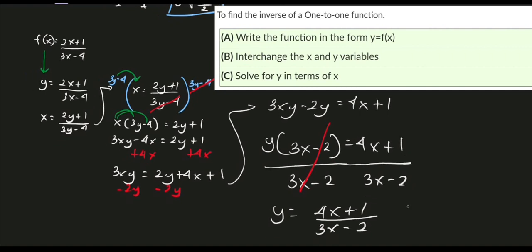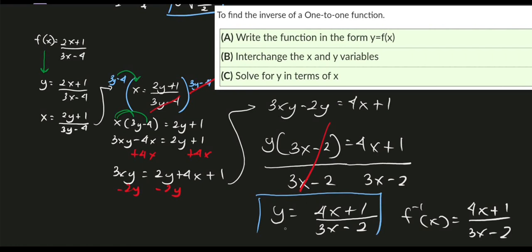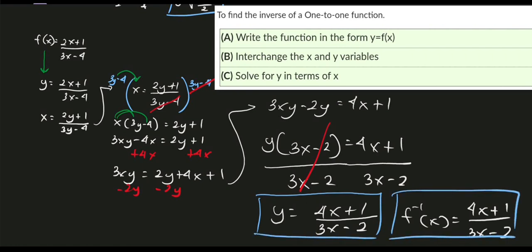So the inverse is f⁻¹(x) = (4x + 1) / (3x − 2). Thank you so much everyone and God bless.